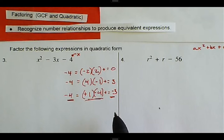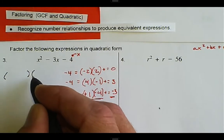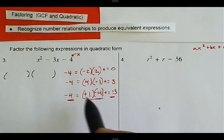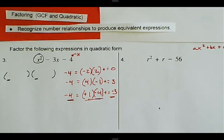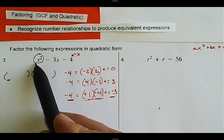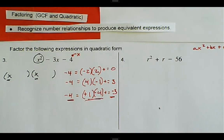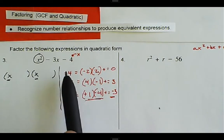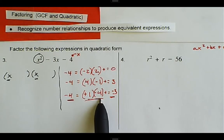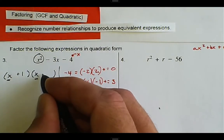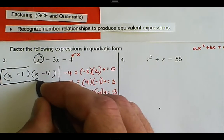Now we can write the factored form. Whenever we're factoring a quadratic, we always want two binomials multiplied together. The first terms of each must multiply to give the leading term. With a lead coefficient of one, those are x and x. Then we plug in plus one and minus four, giving us x plus one times x minus four.